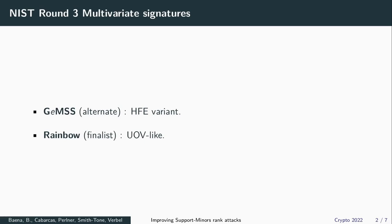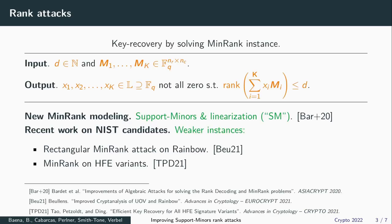Rainbow is a finalist to the same competition and is based on another type of construction called UOV. So even though those two constructions are quite different, both schemes are vulnerable to what we call rank attacks. A rank attack is a particular type of algebraic attack by solving an instance of the min-rank problem.